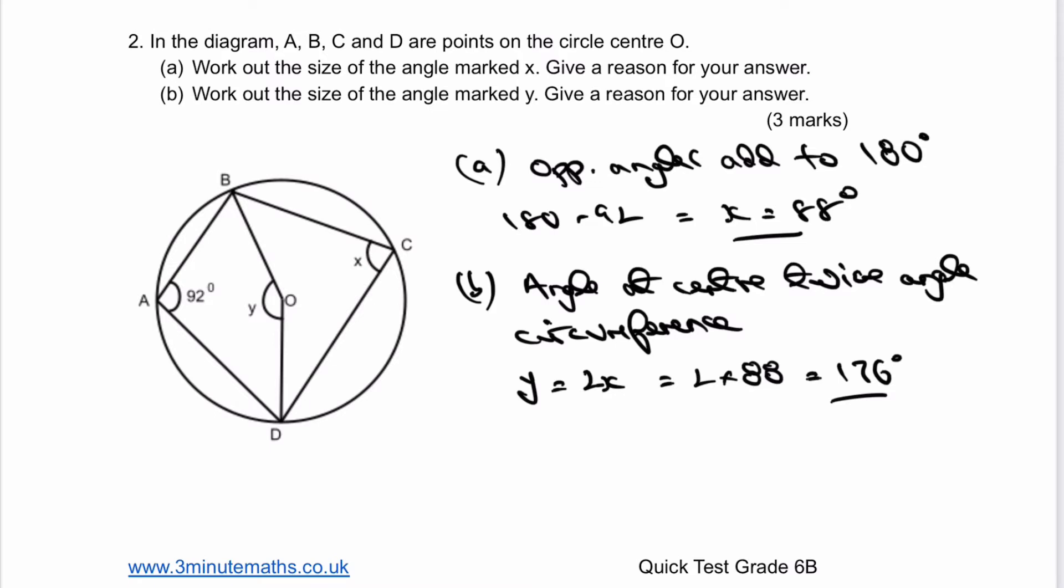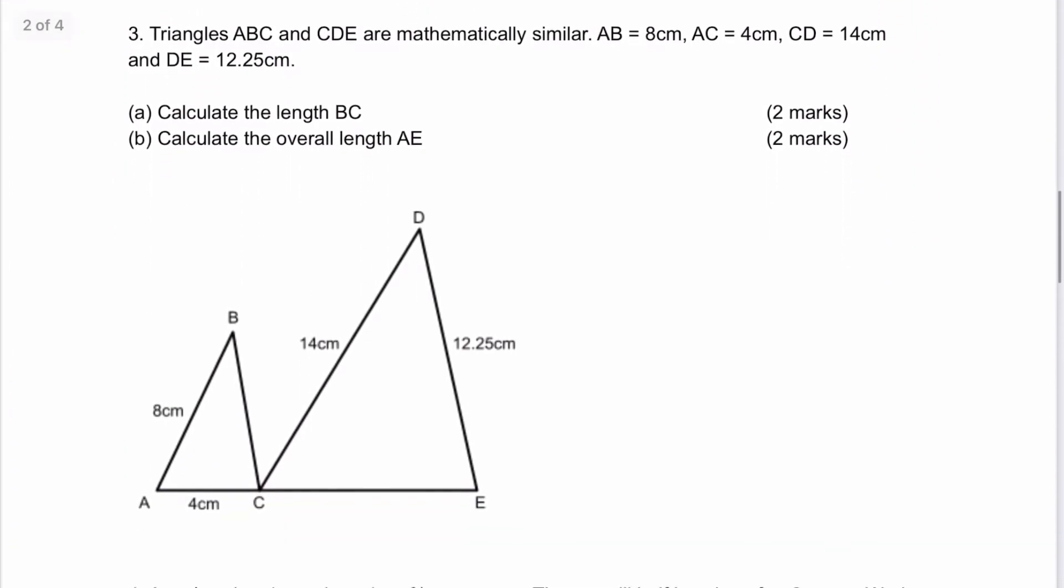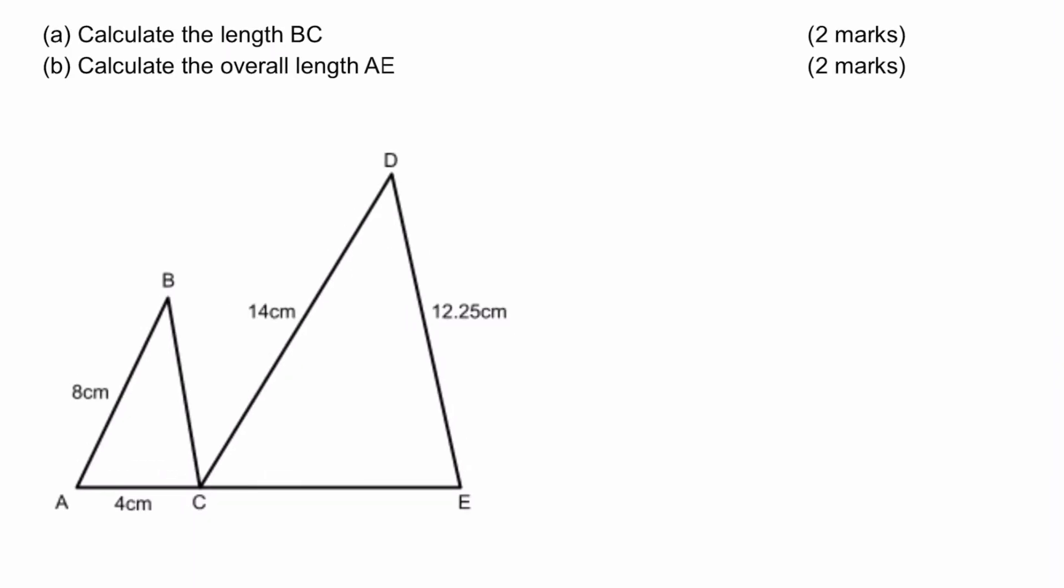Let's move on then to some triangles which are mathematically similar. That basically means there's a scale factor relationship between the two triangles. If I look at AB and CD, one of them is 8 centimetres, the other is 14 centimetres. So if I multiply one to the other, that's going to be multiplying 1.75.